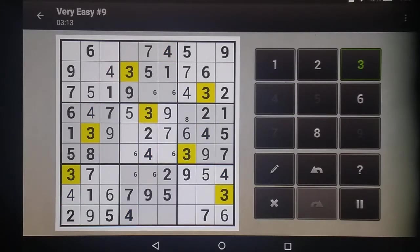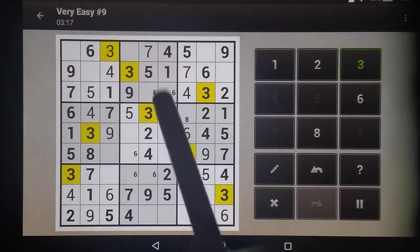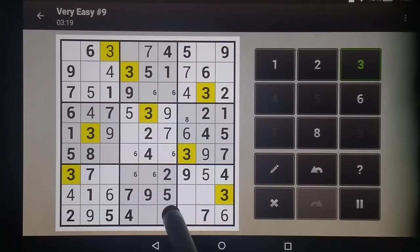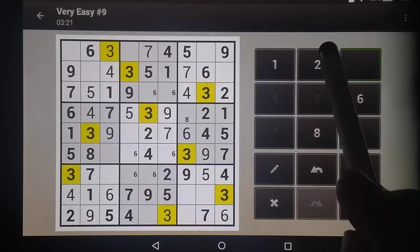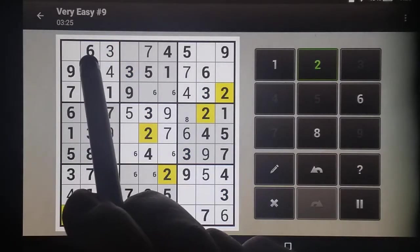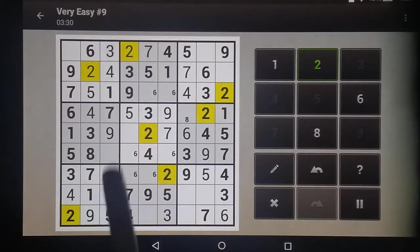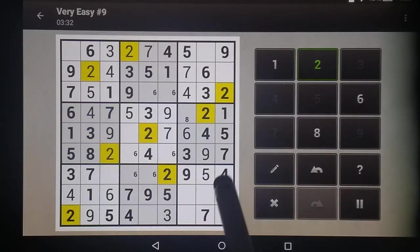On to the 3s. These 2 columns are eliminated, so our 3 is there. These 2 columns are eliminated, so our 3 is there. This column is eliminated, so there's our 2. This column is eliminated, so there's our 2. Here's our 2, because it's the only one.